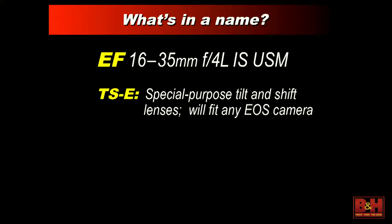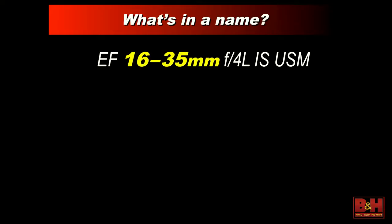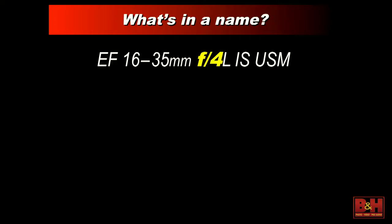For some special-purpose lenses, you'll see additional designations. TSE means a tilt-shift lens, which we'll cover toward the end. There's also the MPE lens — a special-purpose macro lens for extreme close-ups. After the lens type designation comes the focal length in millimeters — the actual measured focal length, with no consideration for any lens conversion factor. Then we give you the maximum aperture of the lens. If it's a fixed f4 it'll say f4; if it's a variable aperture zoom like f4 to 5.6, it'll show that range.